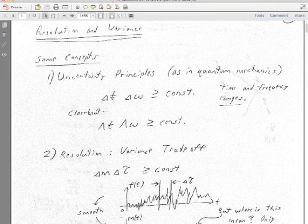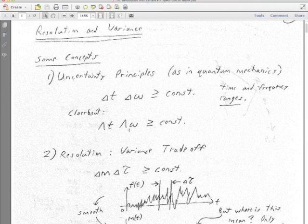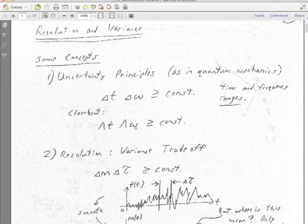The uncertainty principle is often expressed as delta T times delta omega has to be greater than or equal to some non-zero constant. Claerbout makes that clearer by using the capital Greek letter lambda — lambda T times lambda omega, the range of frequency, is greater than or equal to the constant. That means even if you have a very small range in T, you've got a really big range in frequency. We'll delve into this tomorrow.